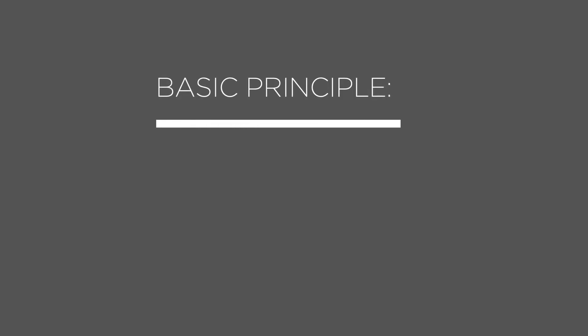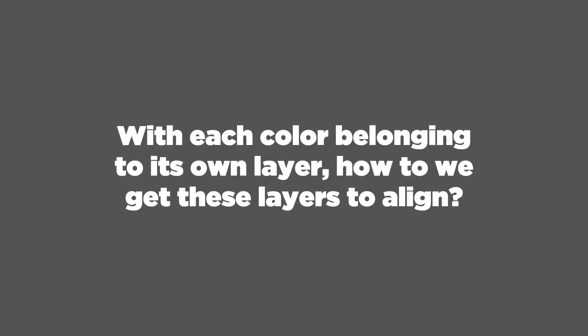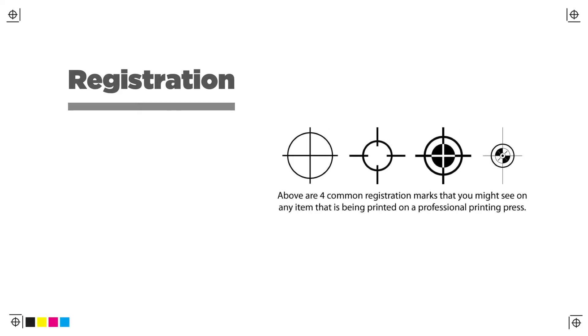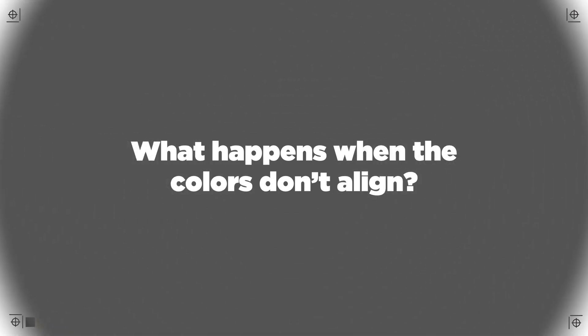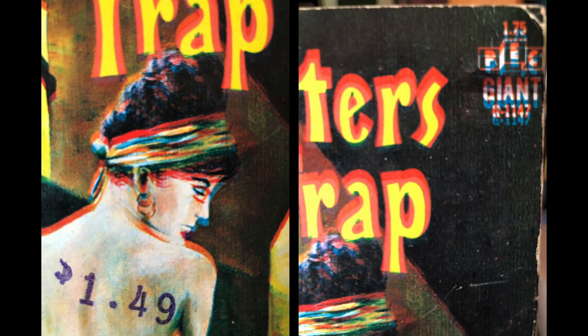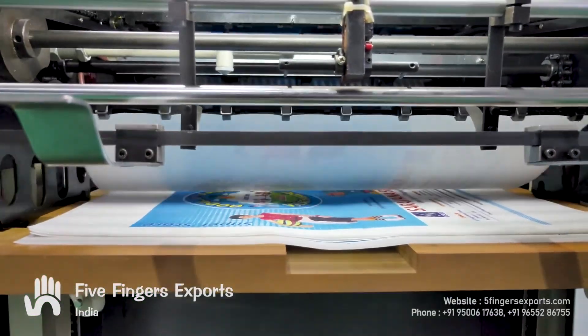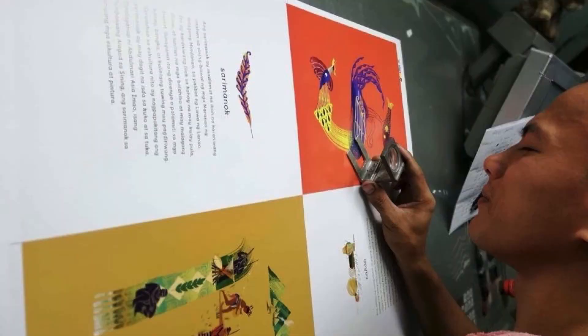The basic principle is that each color belongs in its own layer or printing plate. So how do printers make sure they align properly? We use registration marks. Registration is the method of making sure overlapping images are aligned. It's essential that these color layers align precisely, because if the colors don't align we get something called misregistration. Misregistration happens because machines are not perfect — paper, ink, and the speed of the printing press all contribute to imperfections. That's why quality checks need to be done, unless of course you're going for the misregistered aesthetic.